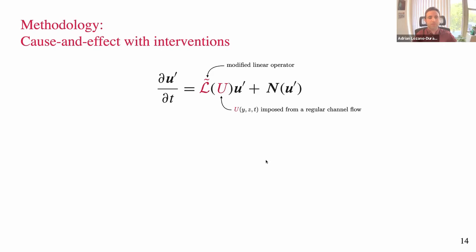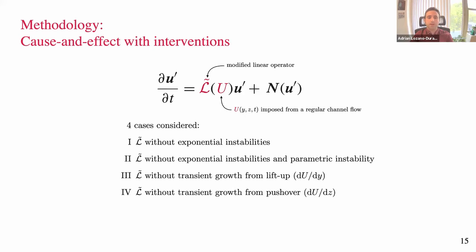I consider a modified operator L̃ with four modifications. In case one, I remove exponential instabilities. In case two, I keep those removed and also block parametric instability. In cases three and four, with both exponential and parametric removed, I additionally try to remove particular types of transient growth: lift-up (related to how the base flow changes in the wall-normal direction y) and pushover (how the base flow changes in the spanwise direction).